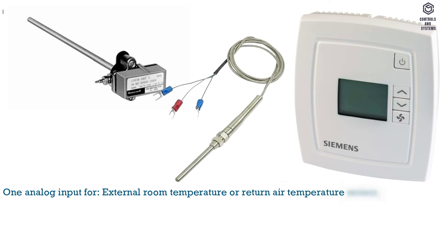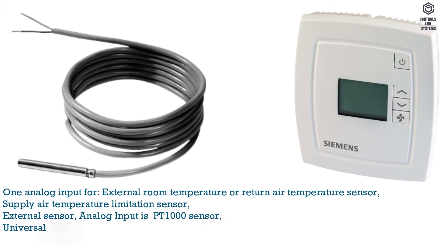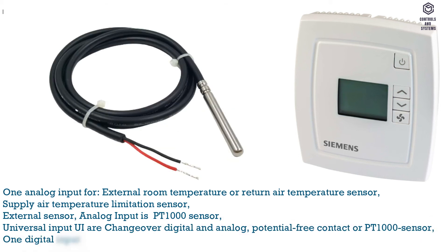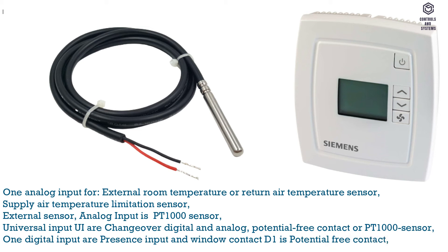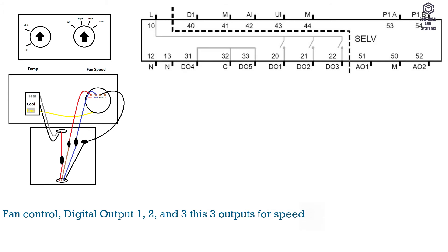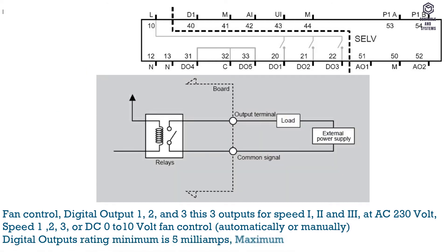Inputs: one analog input for external room temperature, return air temperature sensor, or supply air temperature limitation sensor. External sensor analog input is PT1000. Universal input (UI) is changeover — digital and analog potential-free contact or PT1000 sensor. One digital input: presence input and window contact (D1) is a potential-free contact. Outputs — fan control digital outputs 1, 2, and 3 are the outputs for speeds 1, 2, and 3 at AC 230 V, or DC 0–10 V fan control, automatically or manually.